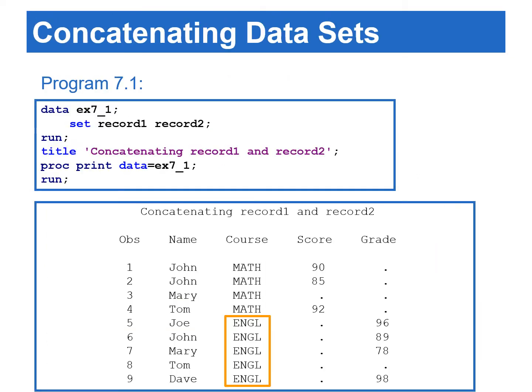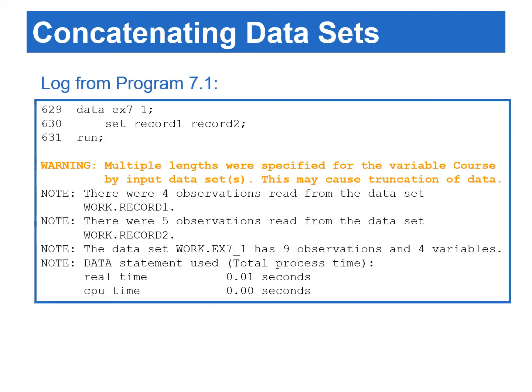This program concatenates record one and record two data sets. Since the length of the course variable in the first data set is four, the length of the variable course is also four in the combined data set. Thus, English is truncated to ENGL.